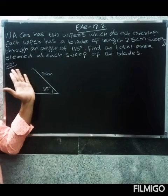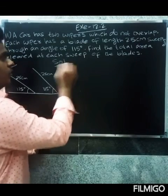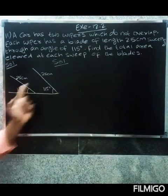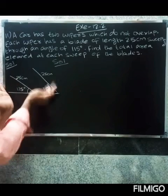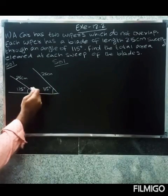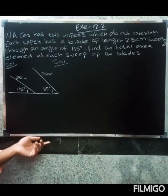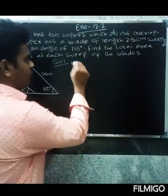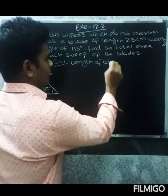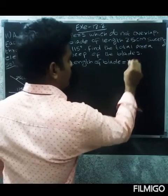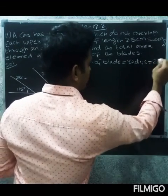So you look at the length of the blade. The length of the blade is 25 cm. What is the length of the blade? It's the radius covered by the wiper.